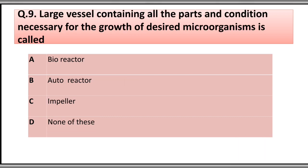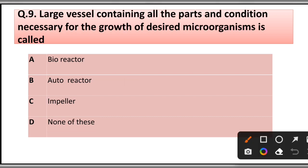Question number nine: Large vessels containing all the parts and conditions necessary for the growth of a desired microorganism are called: A) bioreactor, B) autoreactor, C) impeller, D) none of these. The correct answer is option A, bioreactor.